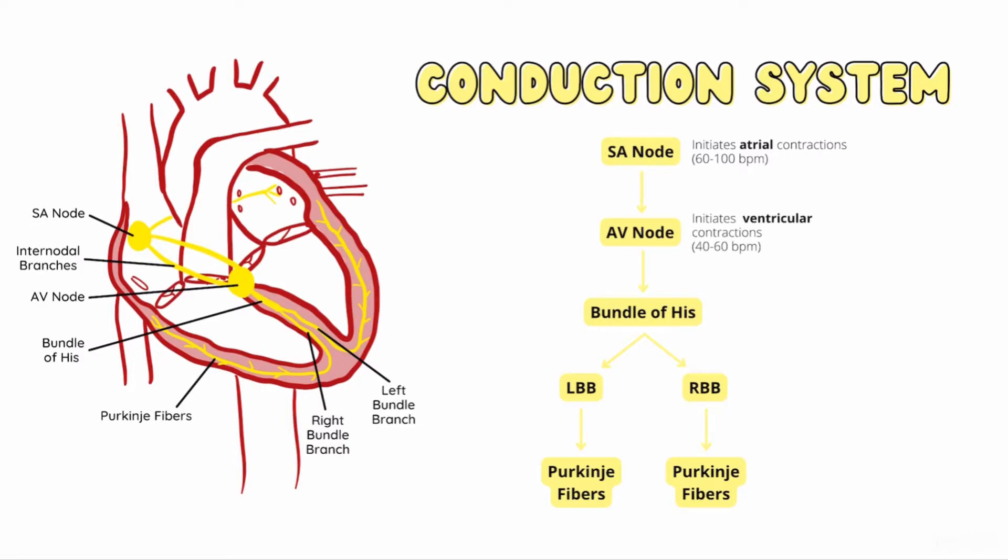Unlike most muscles in the body, the heart muscle does not require direct neural stimulation to contract. The SA and AV nodes are made up of pacemaking cells. These cells are intrinsically programmed to beat at a regular rate. The SA node has an intrinsic rate of 60 to 100 beats per minute, and the AV node has an intrinsic rate of 40 to 60 beats per minute.